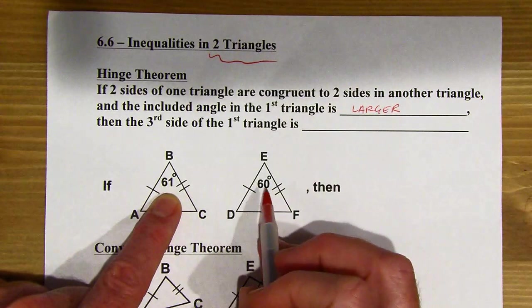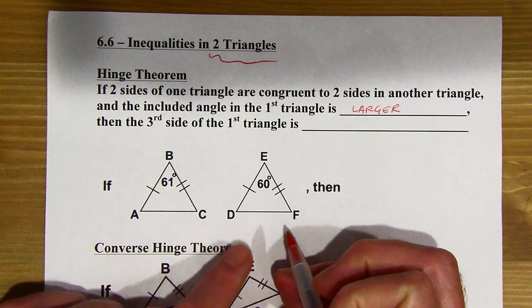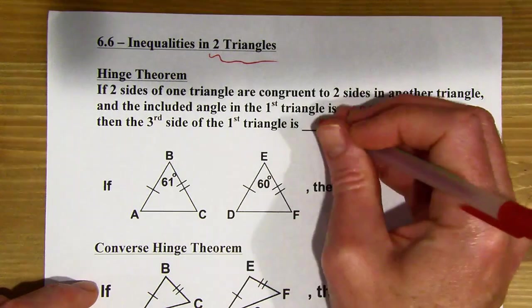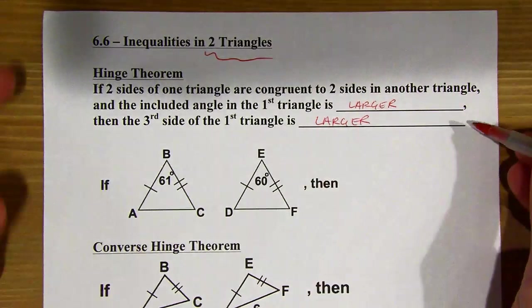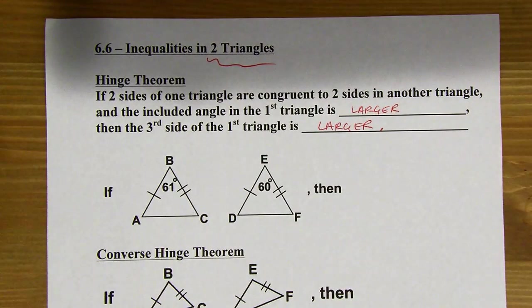that means then the included one in the second triangle, then the third side of the first triangle is going to be larger as well. So both of these blanks are larger. So this paragraph is a bit of a, it's a lot to digest,